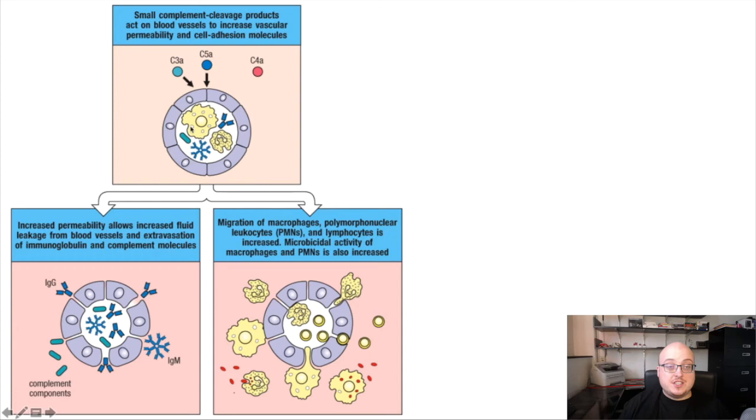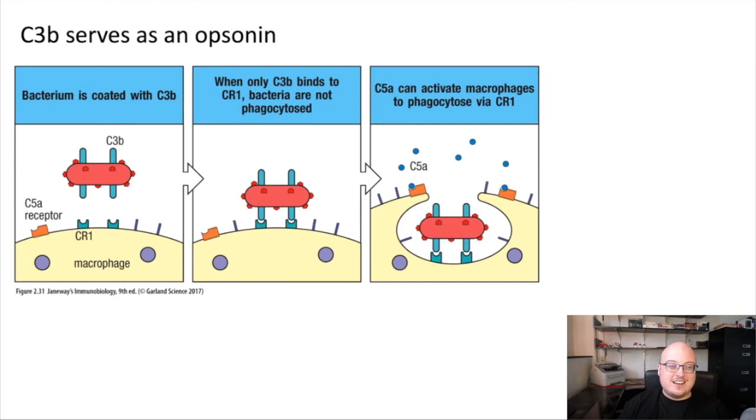So this process of vasodilation is actually a very, very important part of inflammation and is one of the major ways that anaphylatoxins promote the inflammatory effector function of complement. Okay, that's inflammation. Let's talk about the last effector function of complement, which is opsonization, which of course promotes phagocytosis.